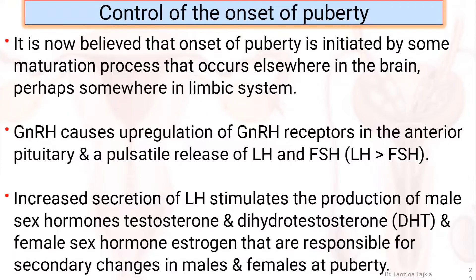Increased secretion of luteinizing hormone stimulates the production of male sex hormones — testosterone and dihydrotestosterone — and female sex hormone estrogen, which are responsible for secondary changes in males and females at puberty.